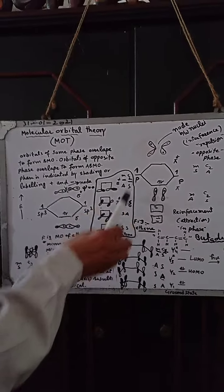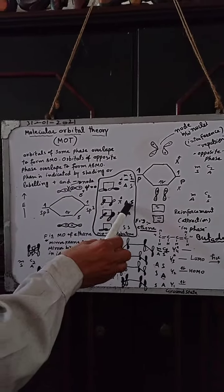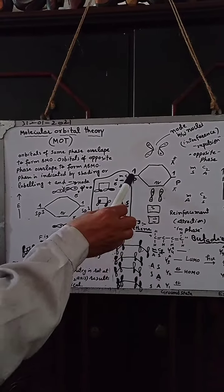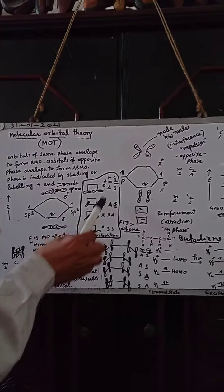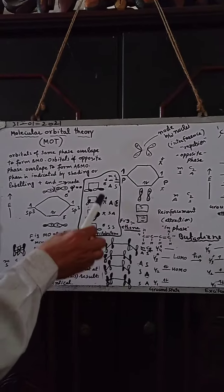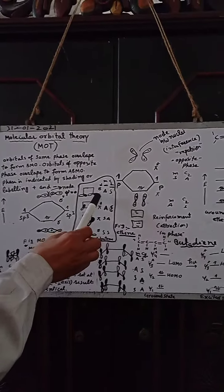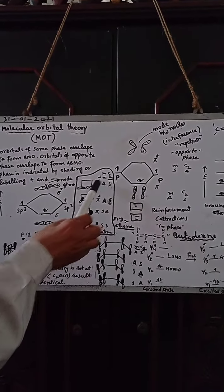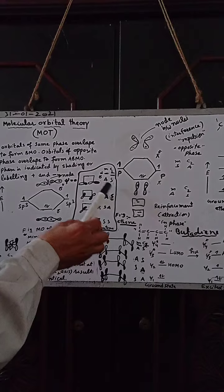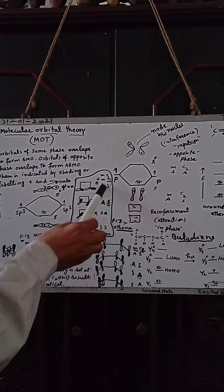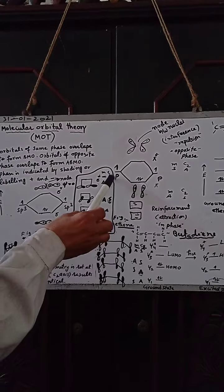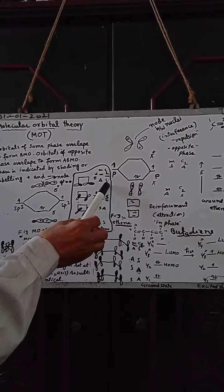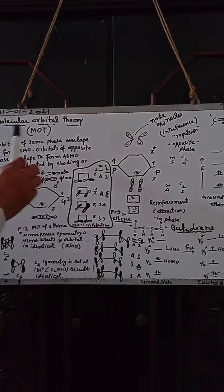Pi star is mirror plane unsymmetrical and C2 is symmetrical. This is sigma star — mirror plane unsymmetrical and C2 is symmetrical. This is the molecular orbital theory.